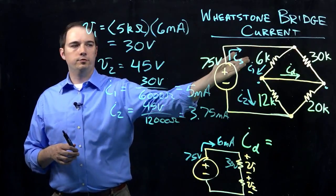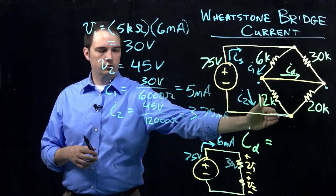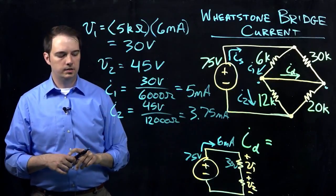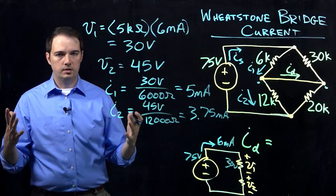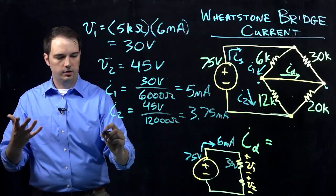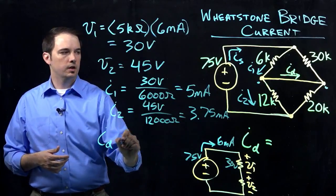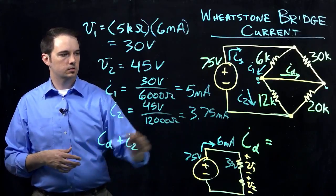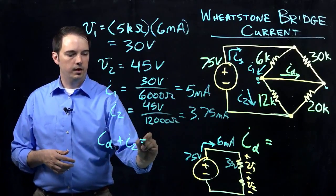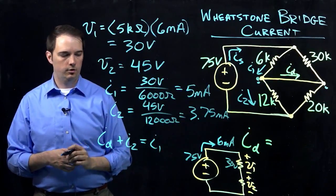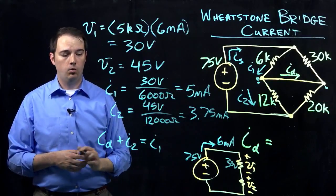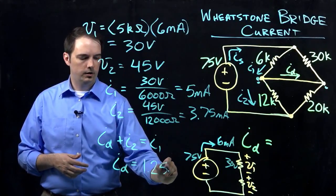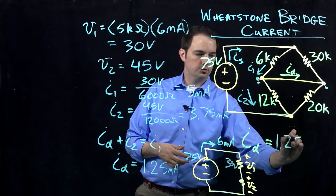We've established the current through the 6kΩ and 12kΩ resistors. The only unknown at this node is current ID, which is what we're solving for. Writing a KCL expression — describing currents flowing out as positive — ID plus I2 equals I1. Plugging in the values gives ID = 1.25 milliamps. This is the final solution we were looking for.